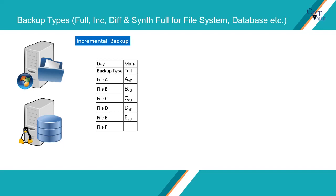Incremental backups. An incremental backup contains only data that is new or has changed since the last backup, regardless of type. It means the backup will not write the entire file to backup media, but it will only write the changes made to the file since the last backup to the backup media. Hence, on average, incremental backups consume far less media compared to full backups.